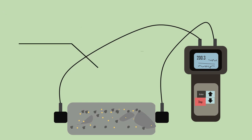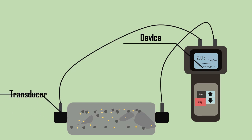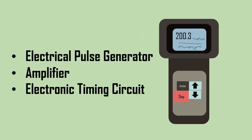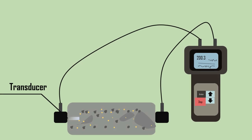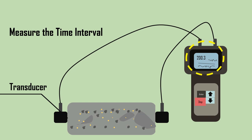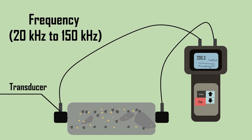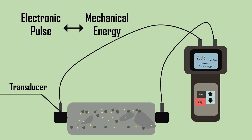The apparatus consists of an ultrasonic device which is connected to a set of transducers. The ultrasonic device contains an electrical pulse generator, amplifier, and electronic timing circuit. The device can send the pulse to the transducer and measure the time interval for a pulse to travel from the transmitter to the receiver end. The two transducers used can operate within the frequency range of 20 kHz to 150 kHz and can transform electronic pulses into mechanical energy and vice versa.